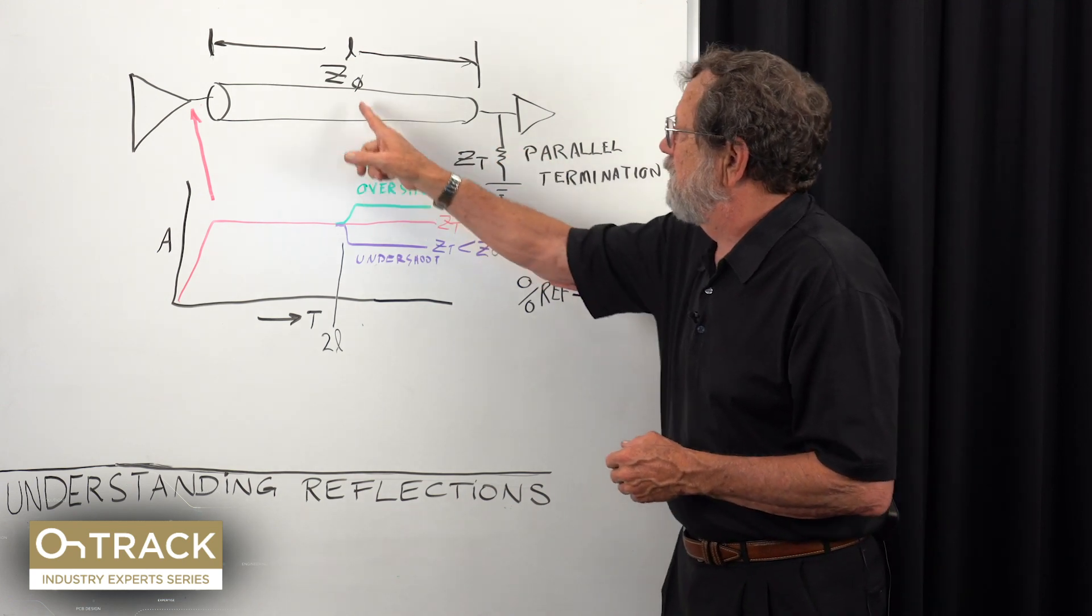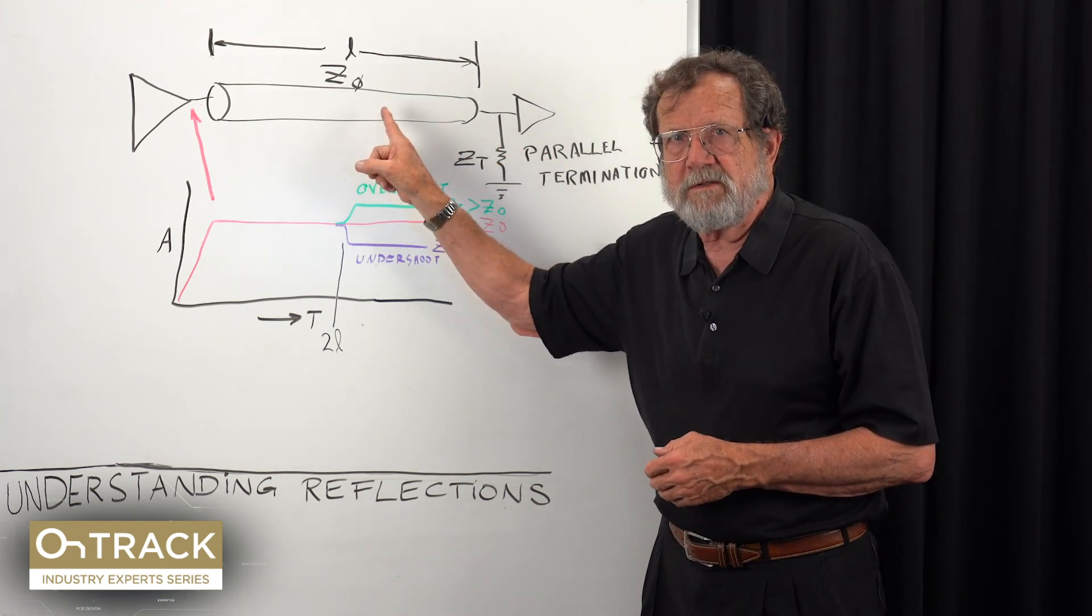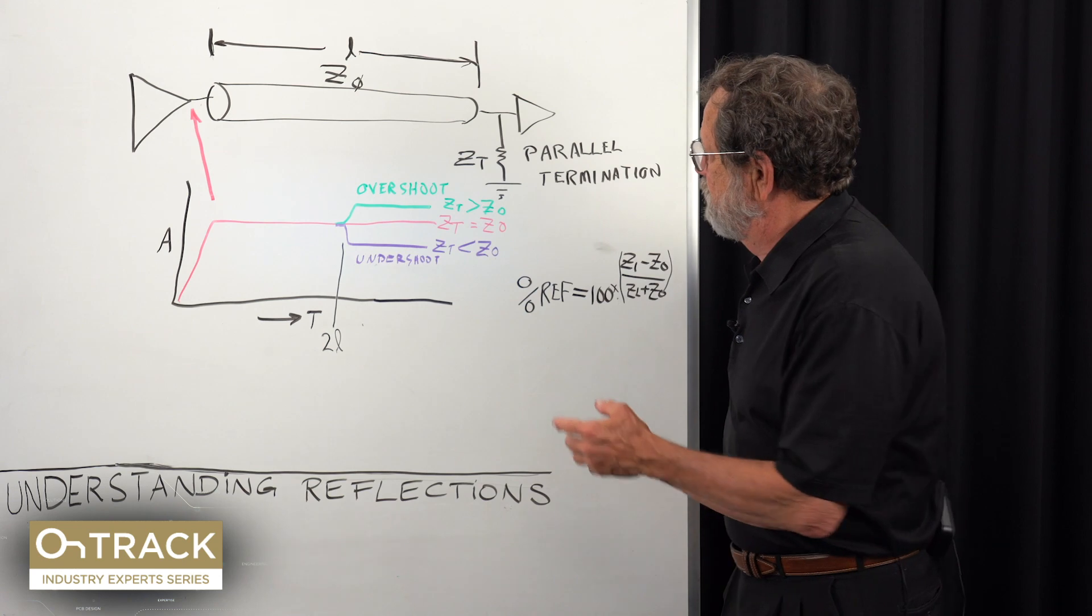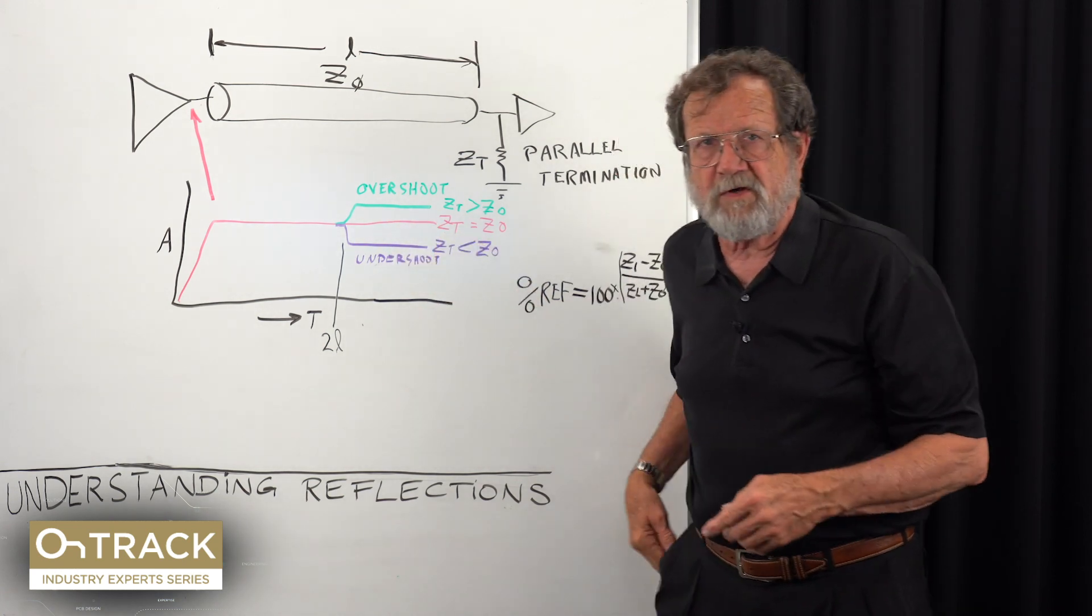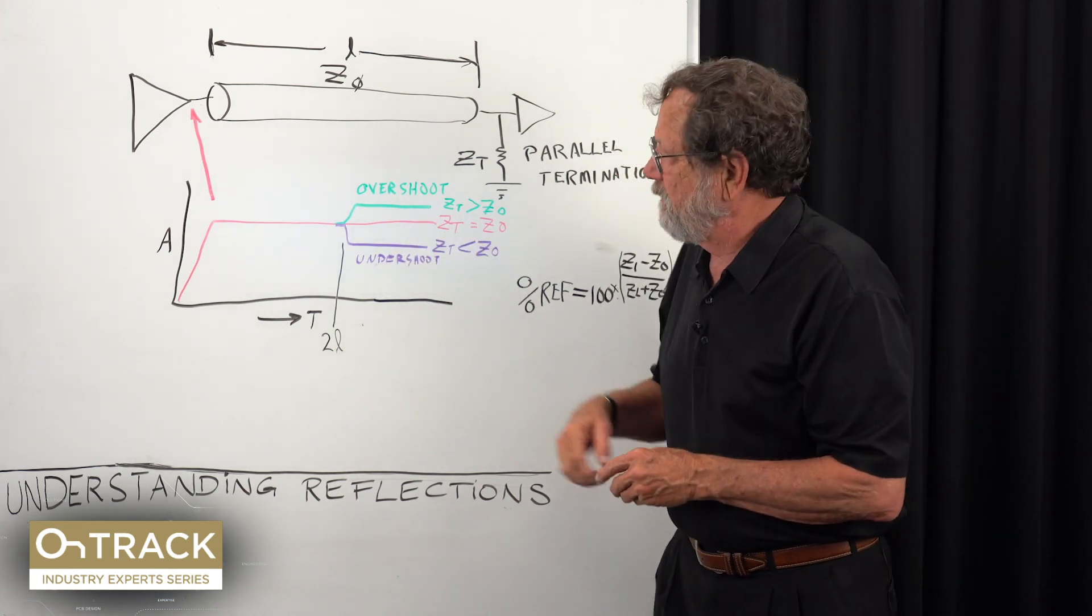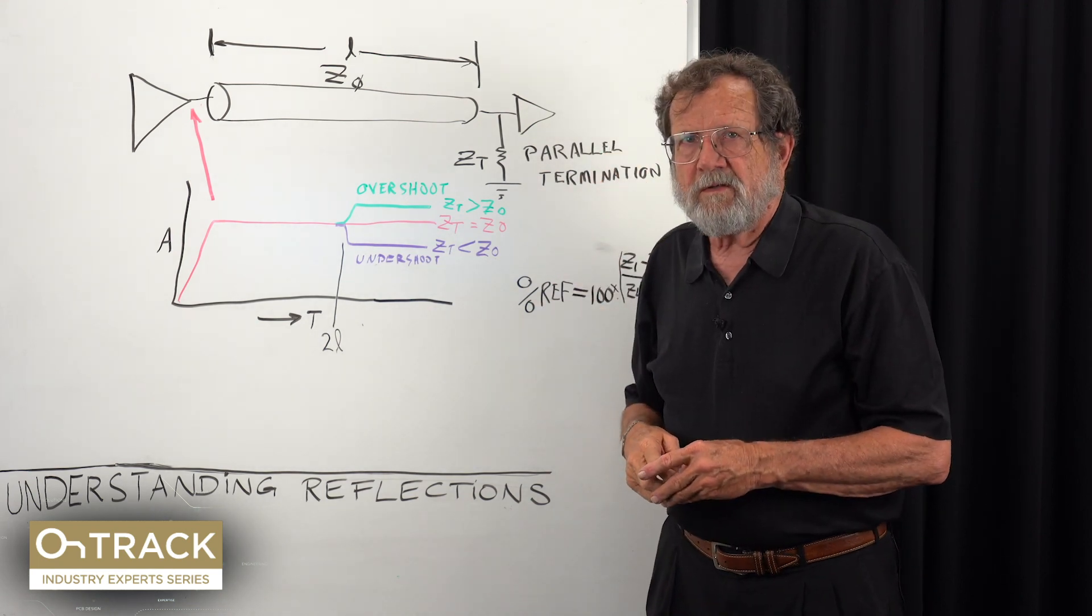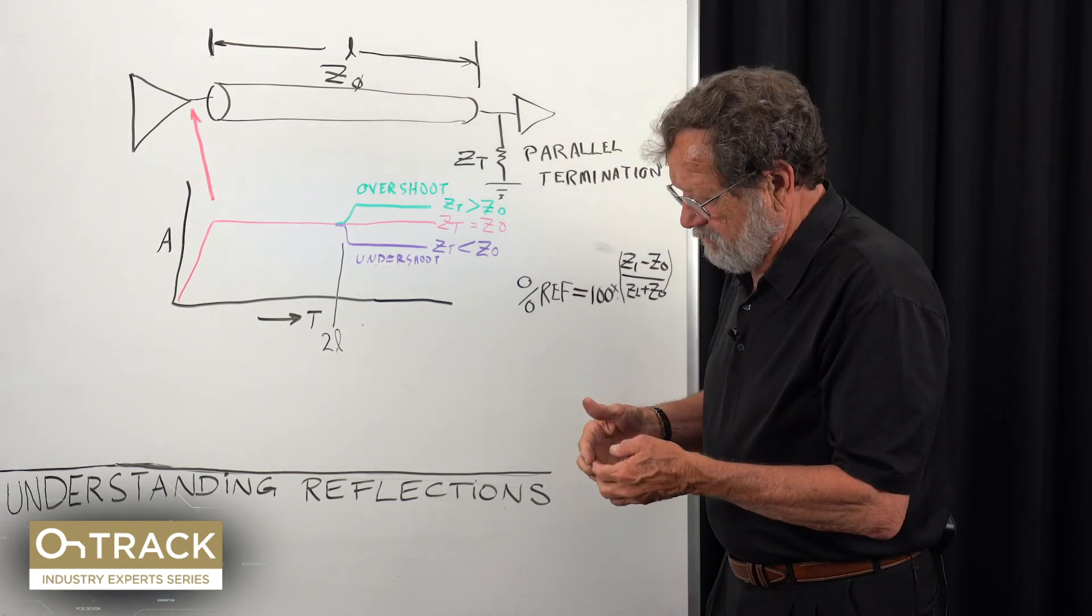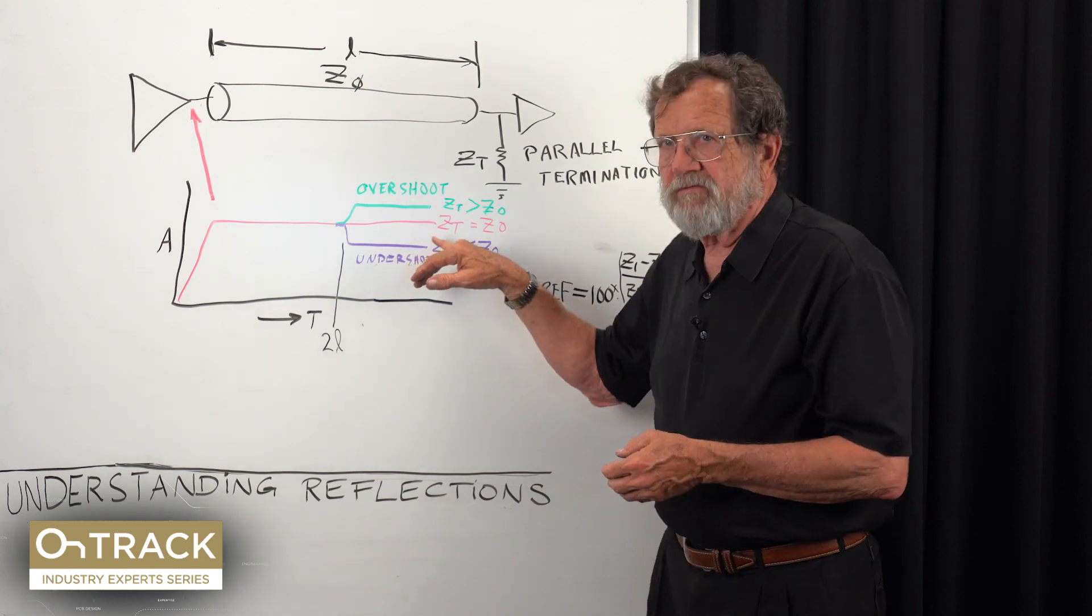For any reason, we would get this kind of reflection off of that transition. This is a reason that we work hard to match impedances—with most modern logic, it's so that we don't have undershoot.